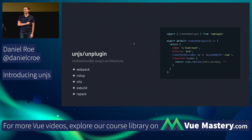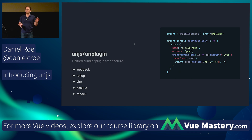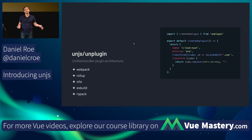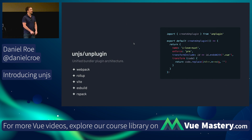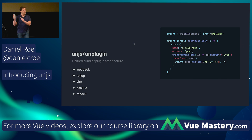Unplugin lets you write build plugins once using a simple, beautiful Rollup-style syntax and deploy them to esbuild, Rollup, Vite, webpack, and rspack. This came out of our need to support both webpack and Vite in Nuxt. When we added rspack support, all existing unplugins gained it automatically just by updating the package. Once you've done this you'll never go back. Here's an example — a build plugin that removes comments from Vue code — and it works across all those environments.